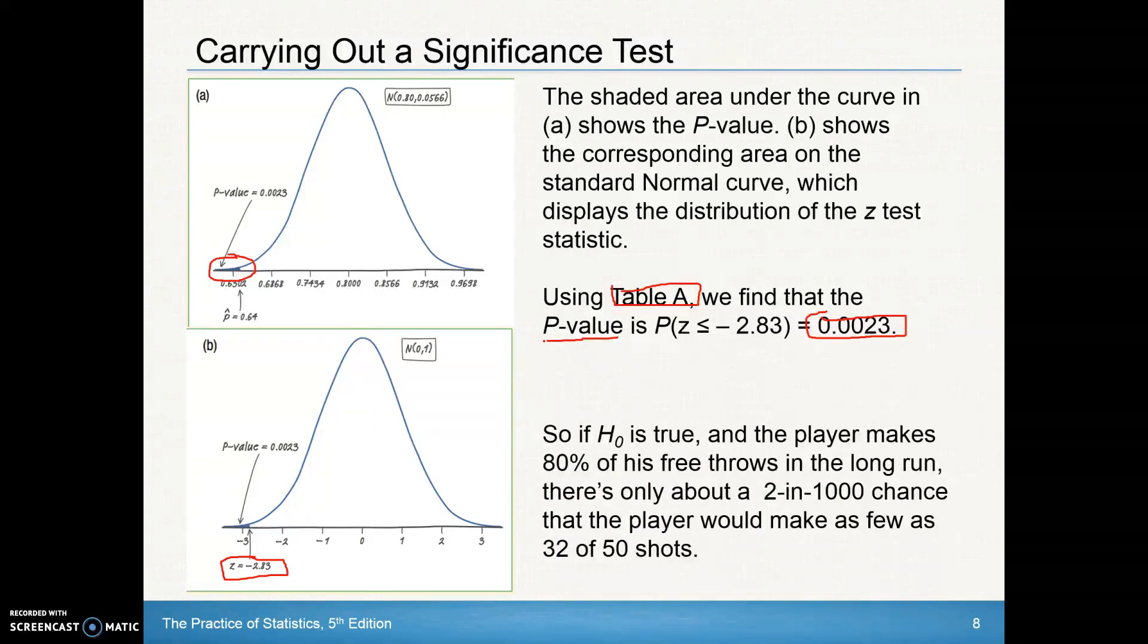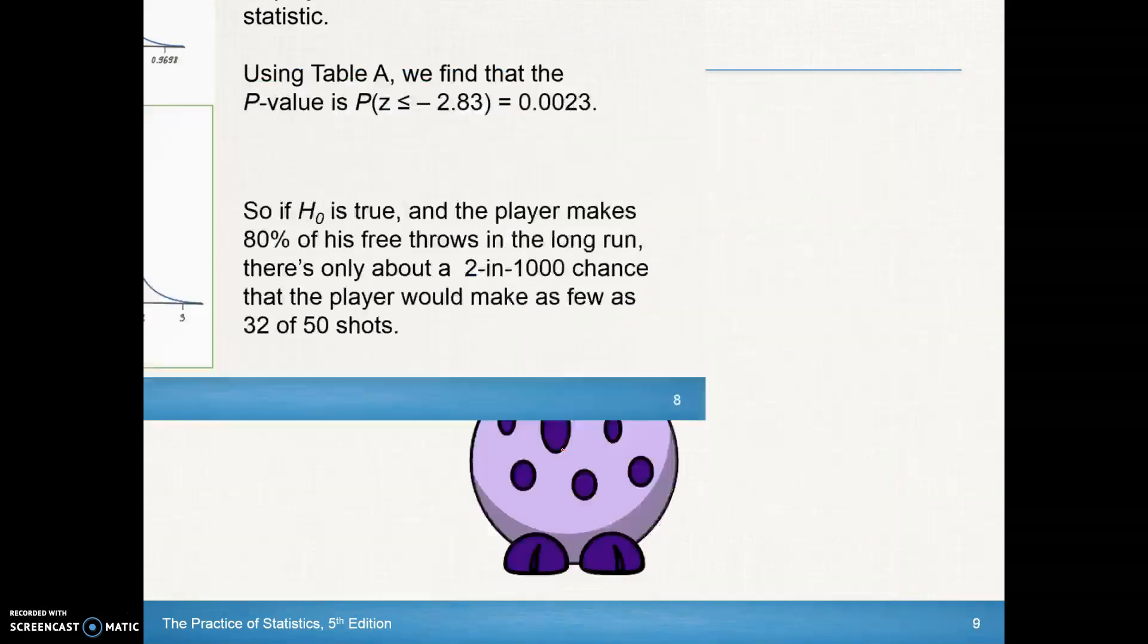So basically what we're saying is that if that null hypothesis is true, in other words, if that player shoots 80% of his free throws in the long run, there's really only about a 2 in 1,000 or 23 in 10,000 chance that that player make as few as 32 of 50 shots. That's a very low chance. So that's again going back to statistical significance and saying that to be statistically significant, it is so small that it doesn't occur by chance. And this does appear to be so small that this probably isn't occurring by chance, that there is probably a reason for that. And that more than likely, the player is lying about that number. He's really not an 80% free throw shooter.